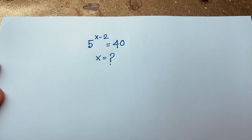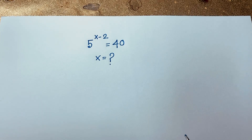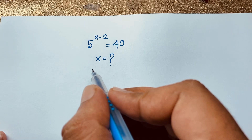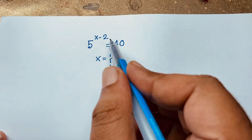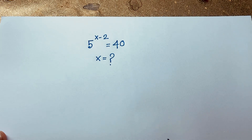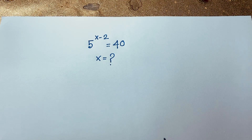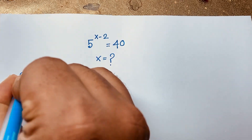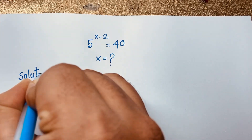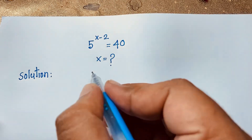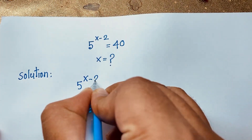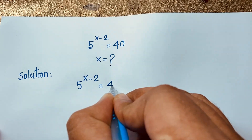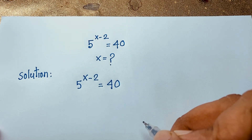Hello everyone, welcome to Russia's classroom. Today we have solved a nice German Math Olympiad question: 5 to the power x minus 2 is equal to 40. We'll find out what x is equal to in this exponential math problem. The solution — first of all, we take our question: 5 to the power (x minus 2) is equal to 40.